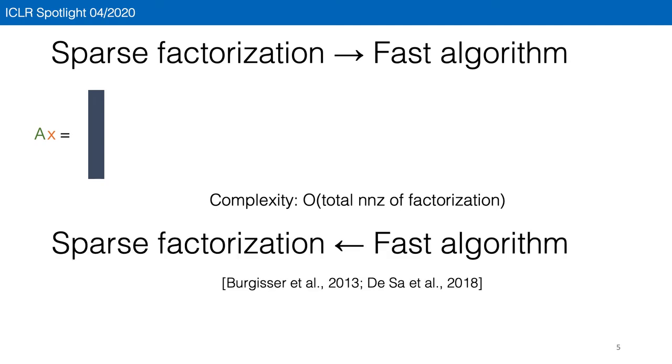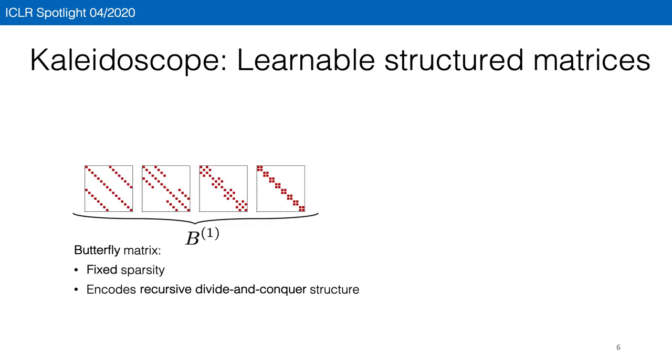The other direction of the equivalence is more subtle, but our recent theoretical work has shown that any matrix with a fast multiplication algorithm also has a sparse factorization. Even with sparse factorization, it's still hard to learn over products of general sparse matrices. So we'll need some inductive bias to make it easier.